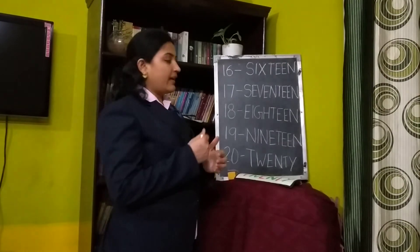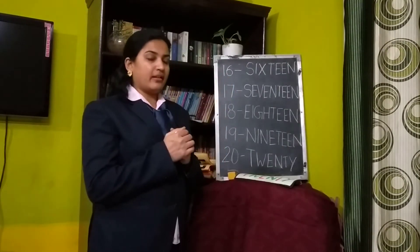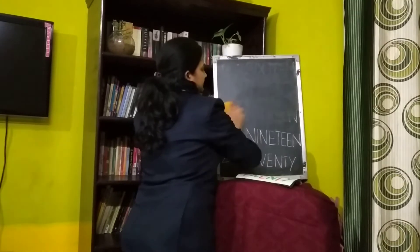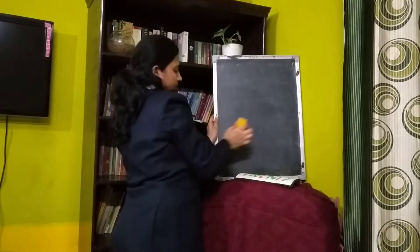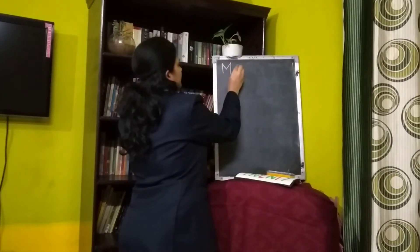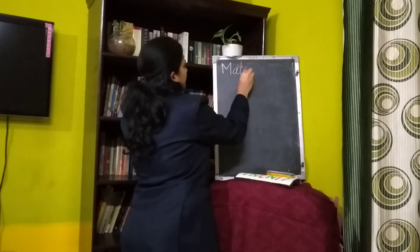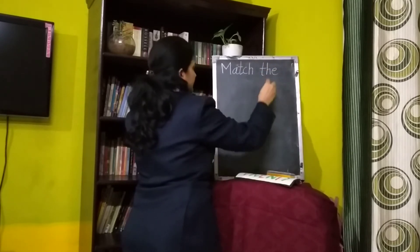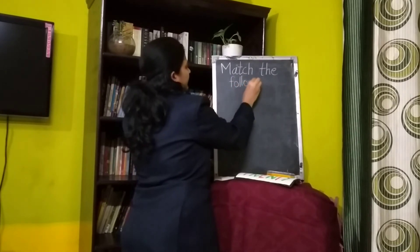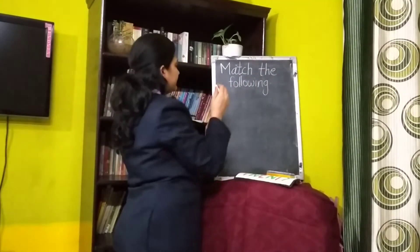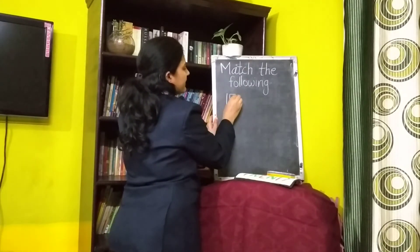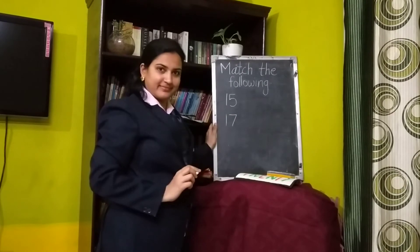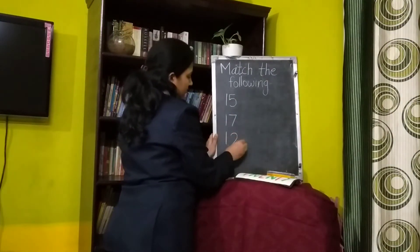I am sure you all have learnt very well about these number names. Can I ask you some questions? Okay, let's try — tell me the answer. What is written here? Tell me what is written here. 15 — okay!